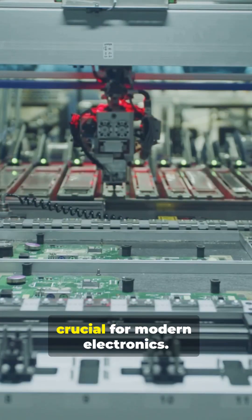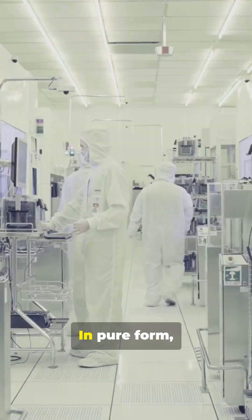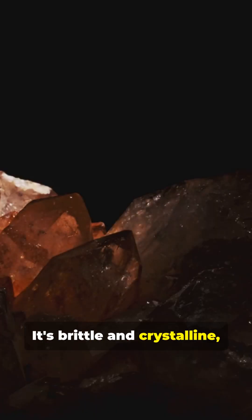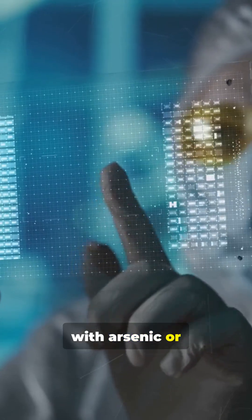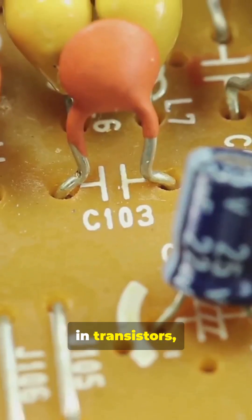Germanium is crucial for modern electronics. In pure form, it's brittle and crystalline, yet when doped, for example with arsenic or gallium, it becomes a powerful semiconductor used in transistors.